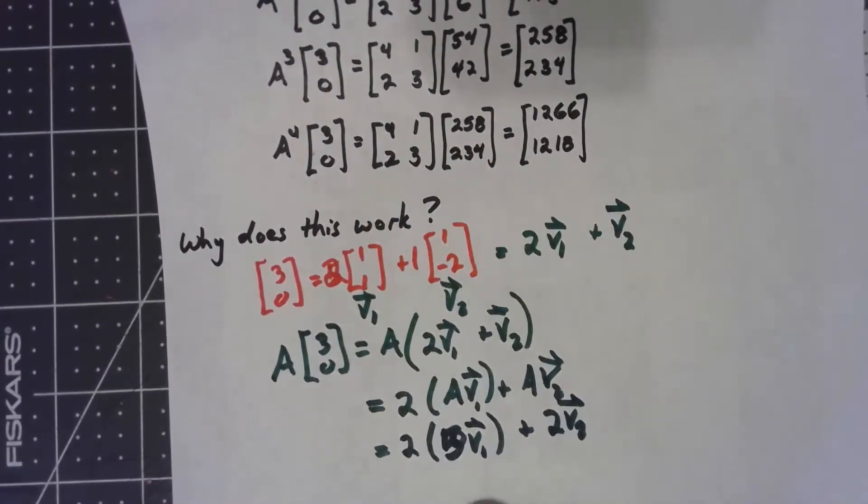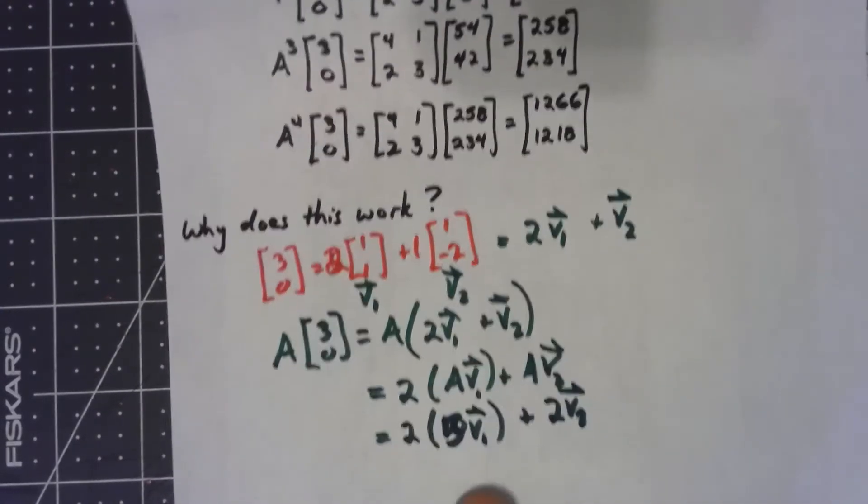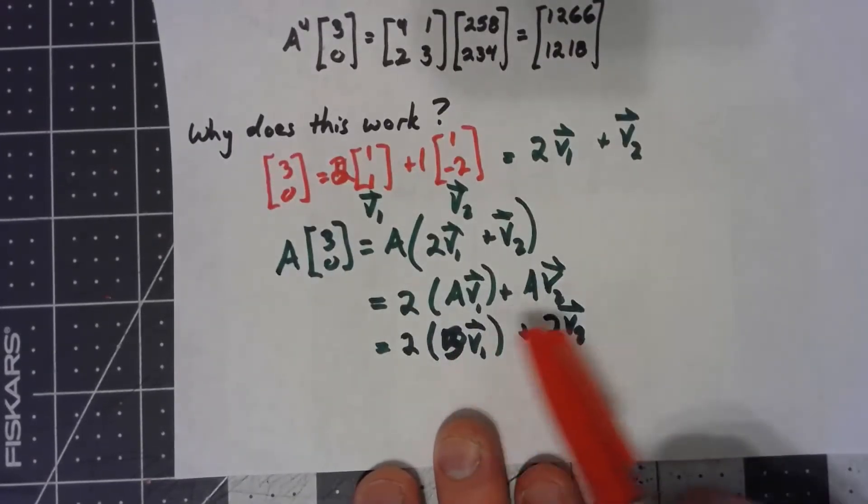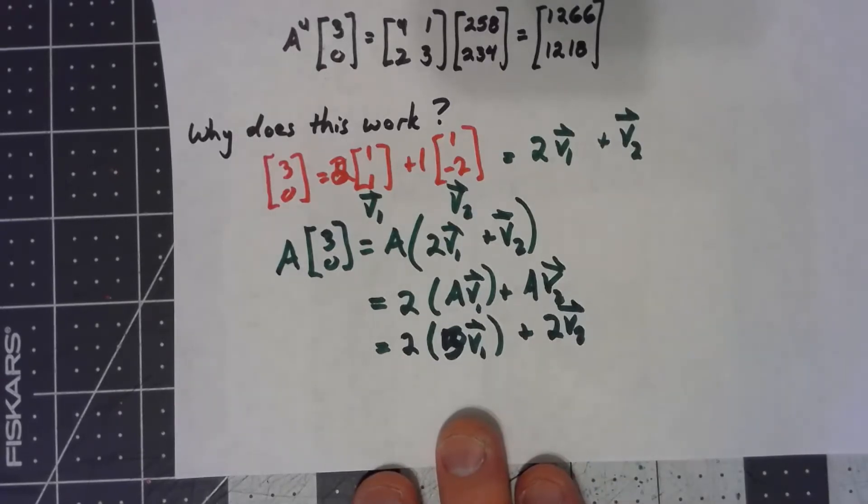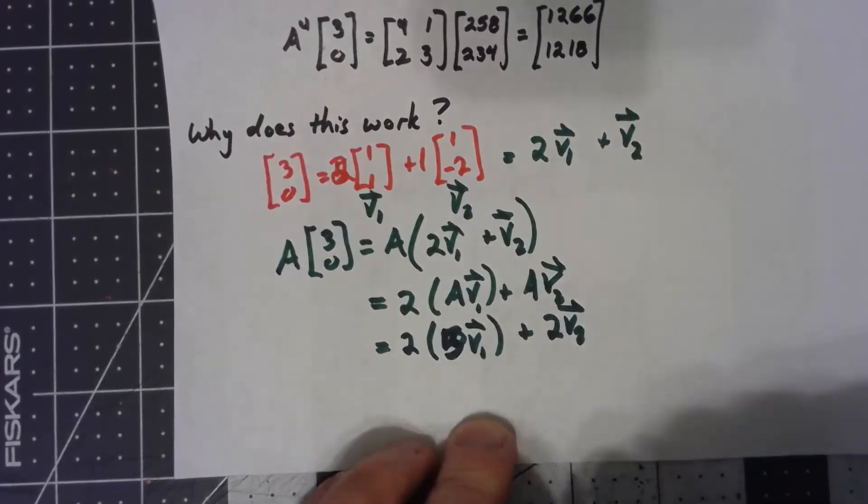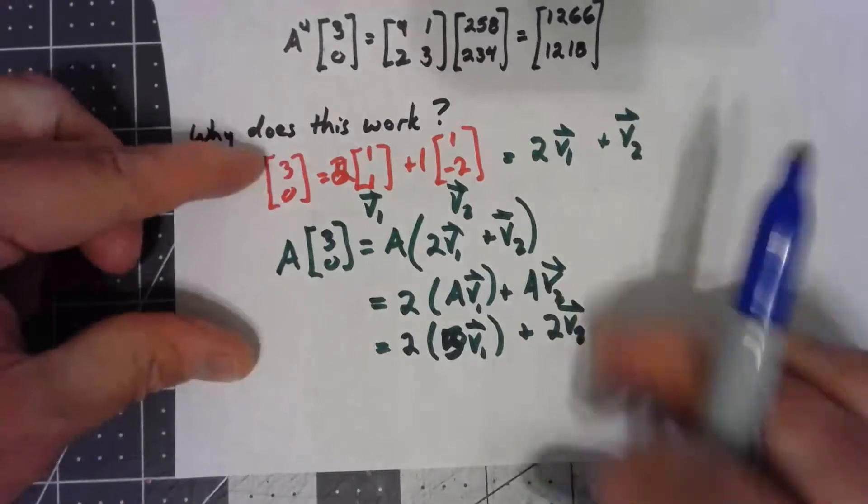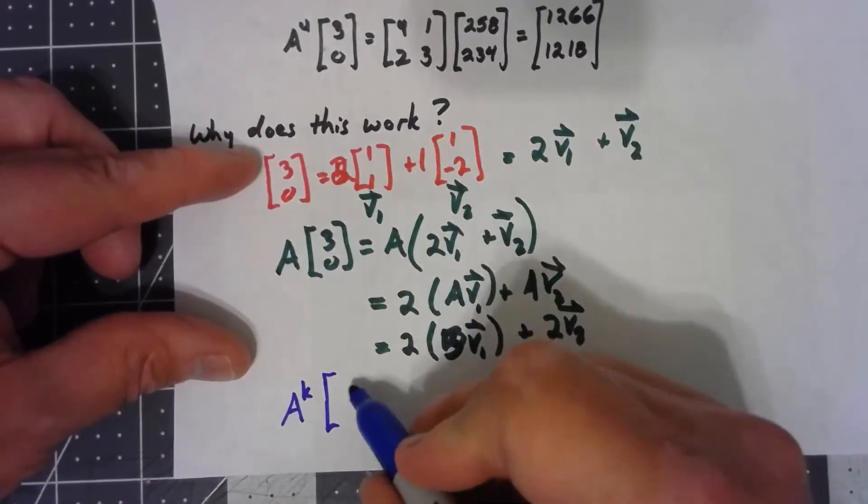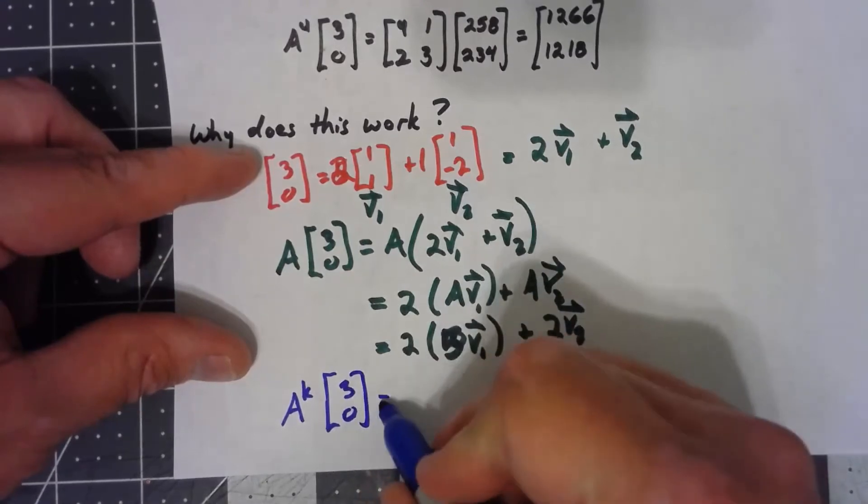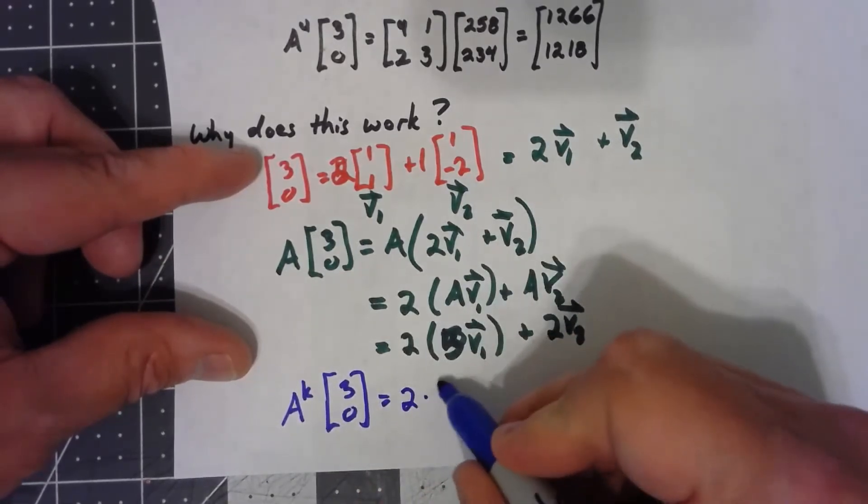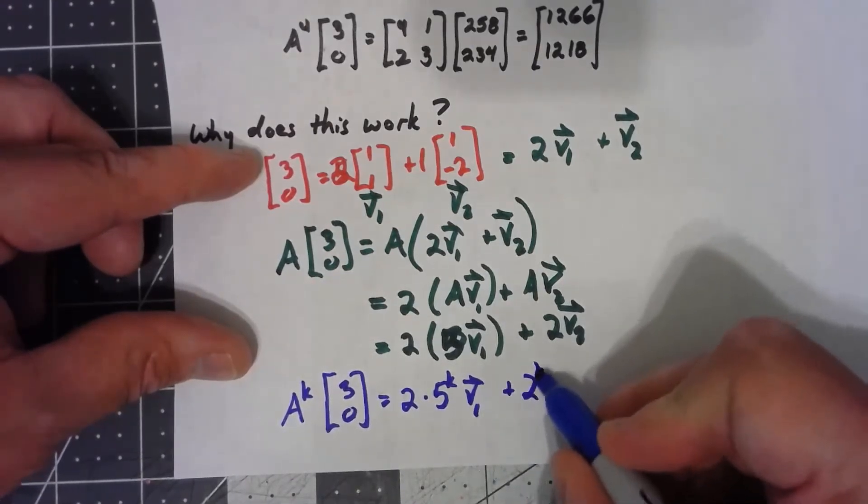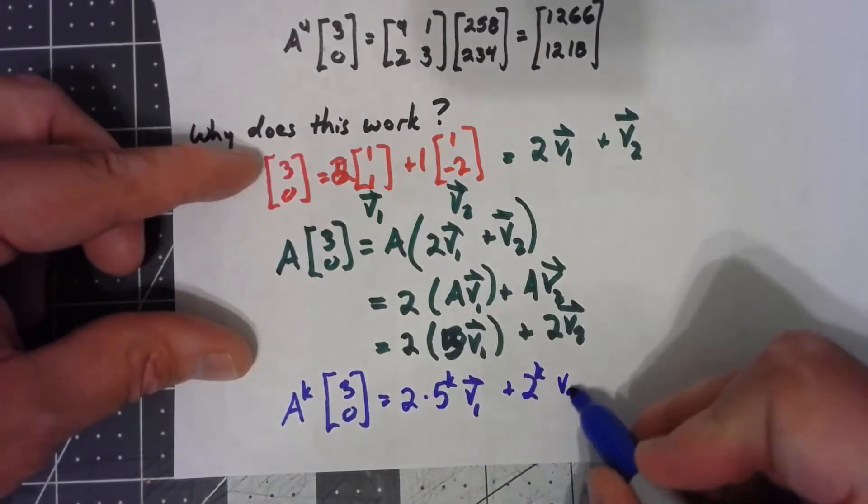And in general, each time I'm multiplying by A, I'm getting another factor of 5 here and another factor of 2 here. So if I were to take A to the k times [3, 0], I'm getting 2 times 5 to the k times v1 plus 2 to the k times v2.